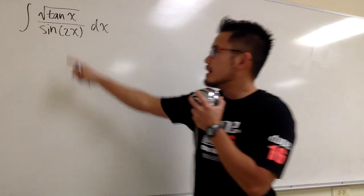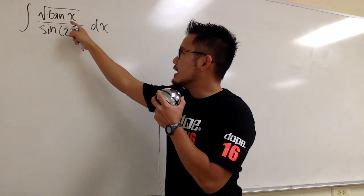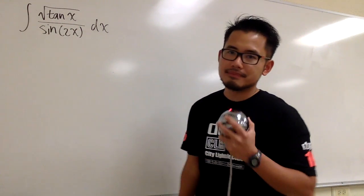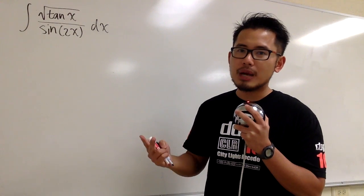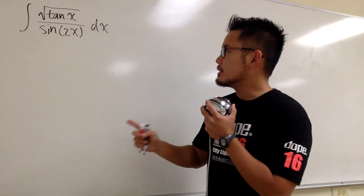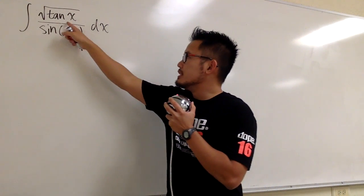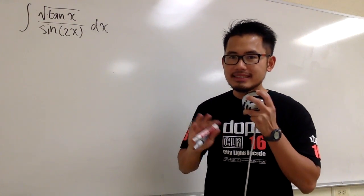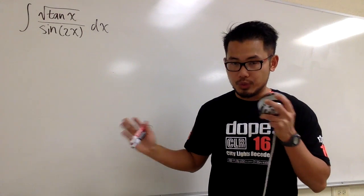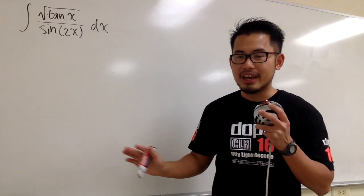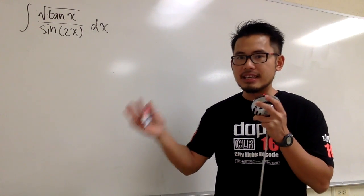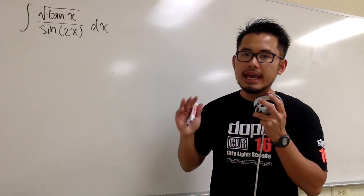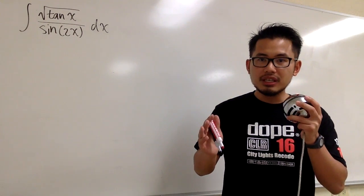Let's integrate the square root of tangent x over sine of 2x. Here we have two troubles. First, we have tangent and sine in an integral — that's not what we would like. Usually we like to have sine and cosine in an integral, or if we have tangent, we want to have a secant paired with it.